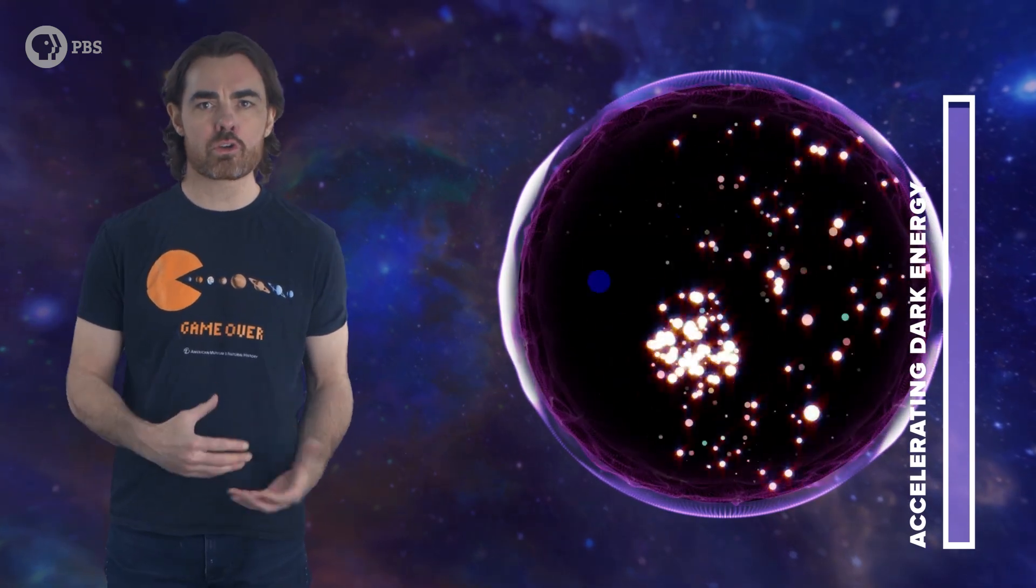So protons and neutrons will be separated into their component quarks. That is the big rip scenario. It happens when the cosmic event horizon is smaller than the smallest possible structure. What could cause something like this? No idea. No one has any idea. That doesn't stop us from giving it a name. We call any dark energy that increases in strength, so with an equation of state less than minus one, phantom energy.